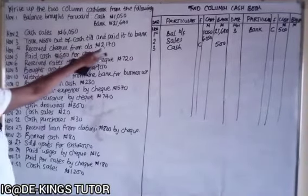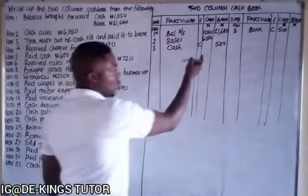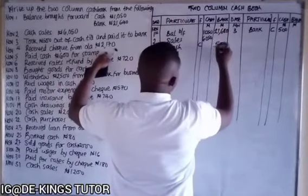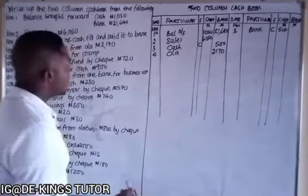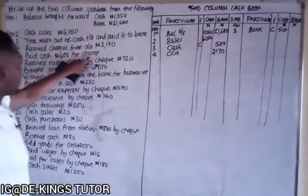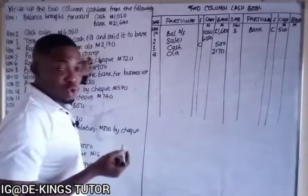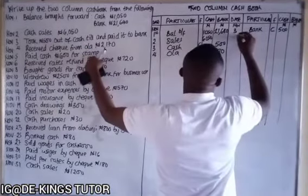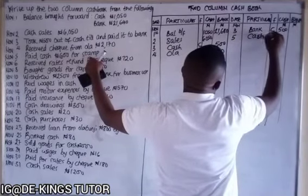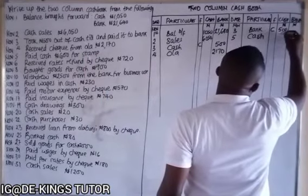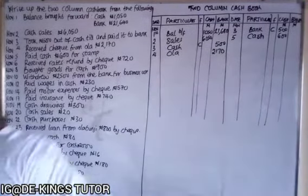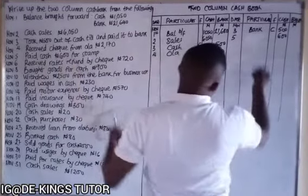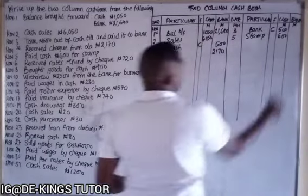November 4 — received check from Orla 2,170. Since it's a check received, it goes to the debit side under the bank column: 2,170. November 5 — paid cash 600 for stamp. Since it's a cash payment going out, it is credited under the cash column. We record: stamp 600.